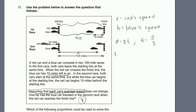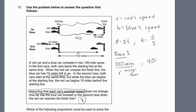In race one, the time the red car took to finish 100 miles is 100/r. Notice the units cancel properly: dividing miles by miles per hour leaves just hours. We also know that's the same amount of time it took the blue car to go 90 miles, so 100/r equals 90/b. That's what the first race tells us.